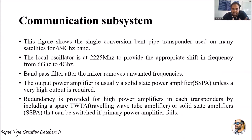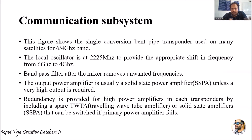This figure shows the single conversion bent pipe transponder used on many satellites. Six by four gigahertz band means six is the uplink and four is the downlink frequency band. The local oscillator uses 2225 megahertz to provide the appropriate shift in frequency, converting the signal from six gigahertz down to four gigahertz.